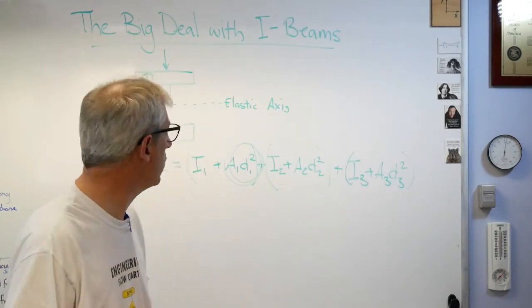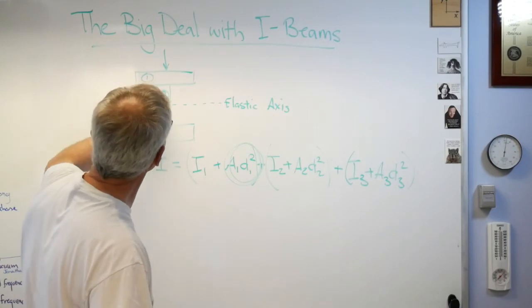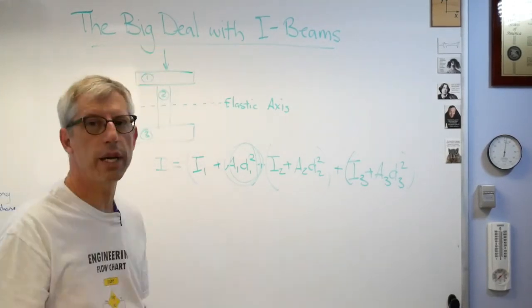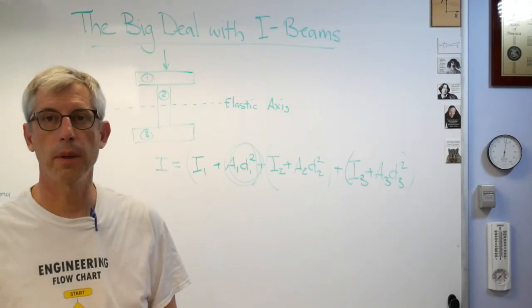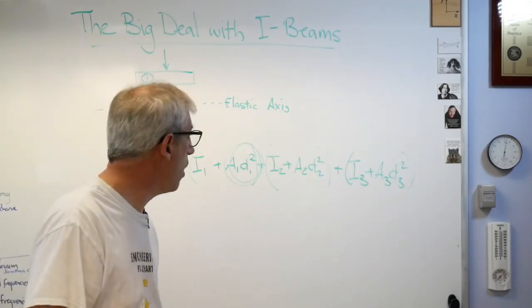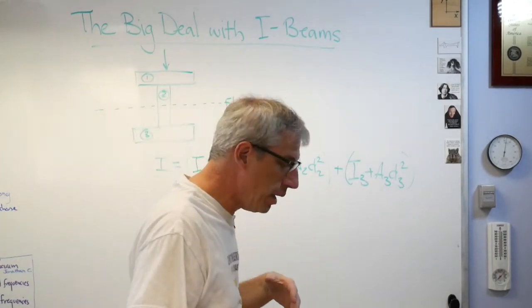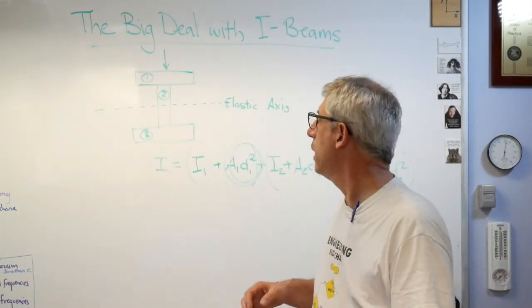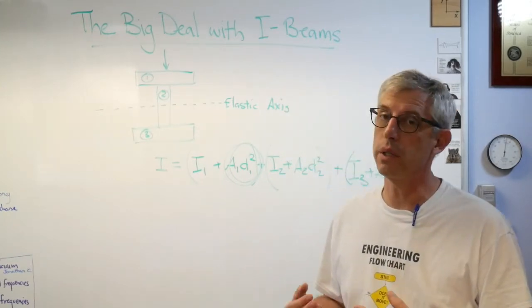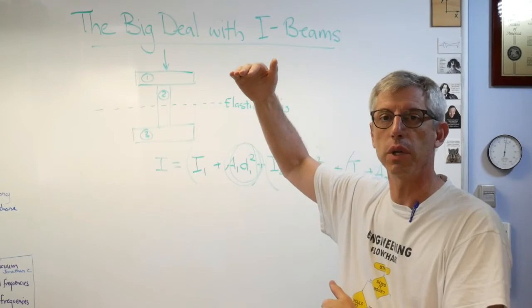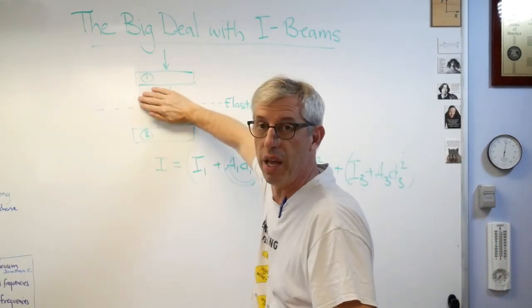That's why we do this. These things are called caps, and that's called the web. We put the caps as far away from the elastic axis as we can get them. That's how the rationale behind an I-beam—that's why they're everywhere. If you want them as stiff as they can be and as light as they can be, put the material just as far from the elastic axis as you can get it. What if we just put it all right there and we didn't have any in the middle?